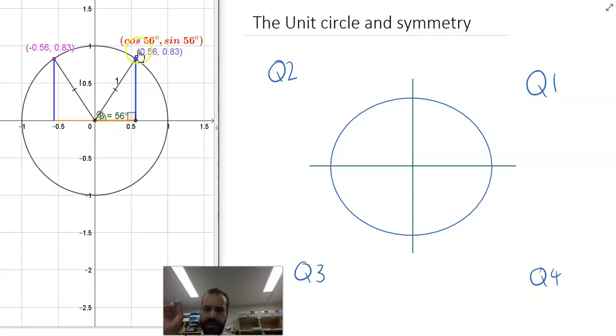I've just altered my label here slightly to say that it's cos of 56, because that's the 56 degrees, and sine of 56 degrees, which are these two values here. Now, what about these two values? What do those values represent? Well, that's equal to cos of 124 sine 124. Now, why 124?